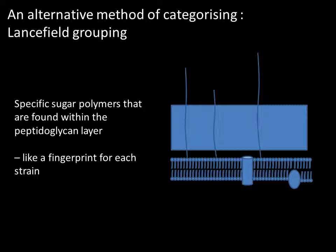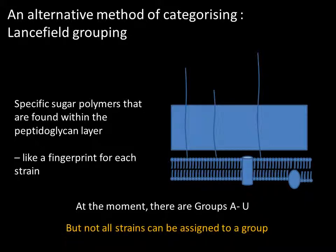Just to refresh your memory, this is a gram-positive cell wall - single lipid bilayer, thick peptidoglycan layer - and unlike the gram-negative cell, there isn't a second lipid bilayer on the outside. Streptococci can be grouped into different groups which at the moment go from A to group U, and there may be other groups discovered in the future. Confusingly, not all streptococcus strains or species can actually be assigned to a group - some don't have any of these Lancefield antigens present in their cell wall, though that doesn't mean they lack an intact cell wall.